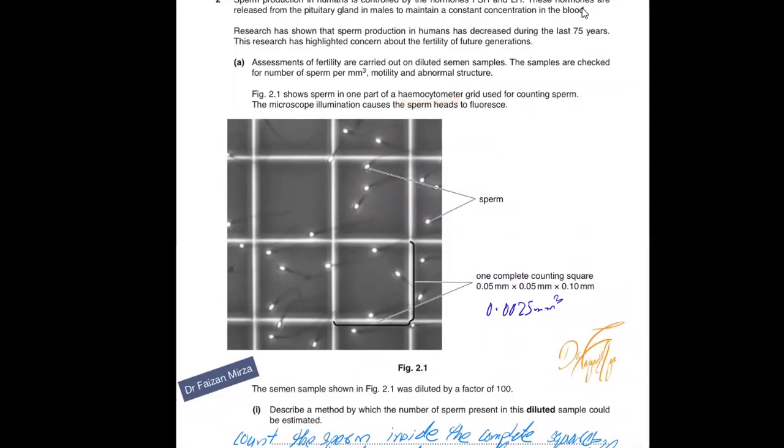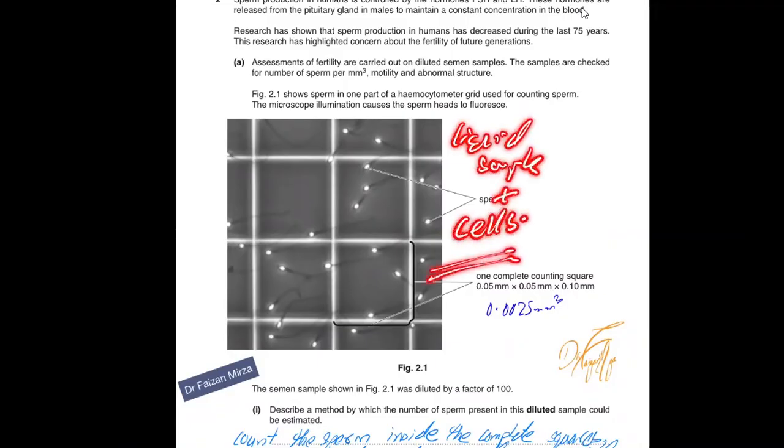This is a glass slide on which you can place a sample of cells present in liquid. You have a liquid sample with cells, and you can count the number of cells in that liquid sample by adding a very small quantity onto this glass slide. This glass slide is called a Hemocytometer.